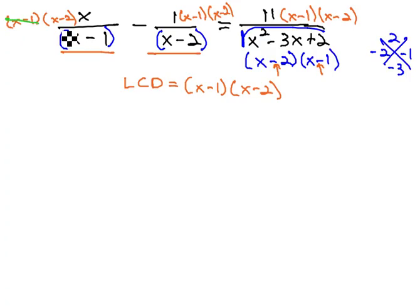In the first fraction, the x minus 1's divide out, leaving x times x minus 2. In the middle fraction, the x minus 2's divide out, leaving minus 1 times x minus 1. Equals, in the last fraction, the x minus 2's and the x minus 1's divide out, so all we have left is the 11.